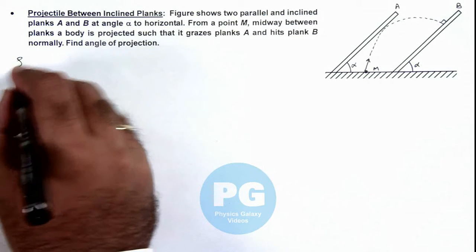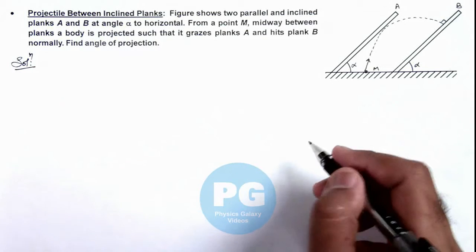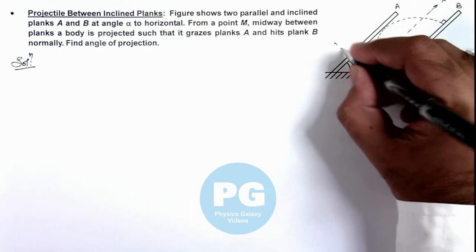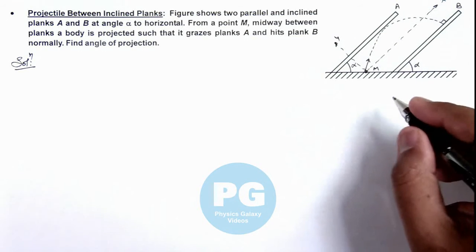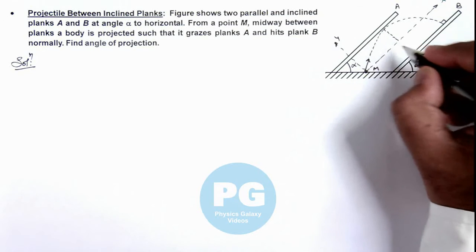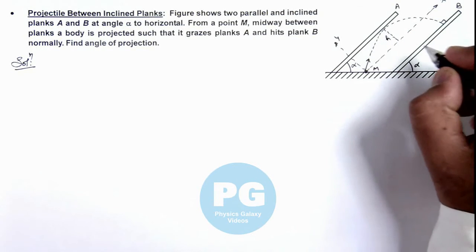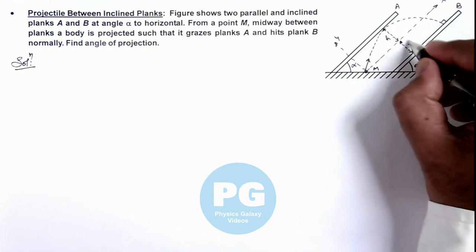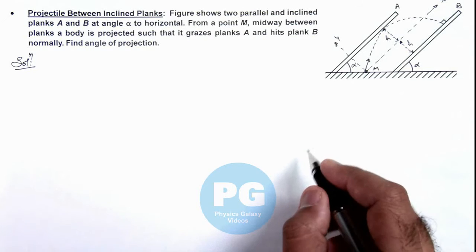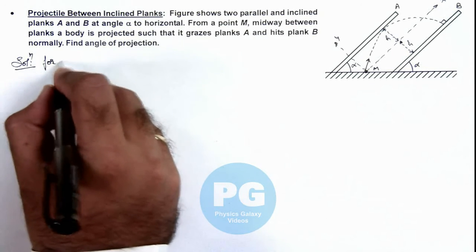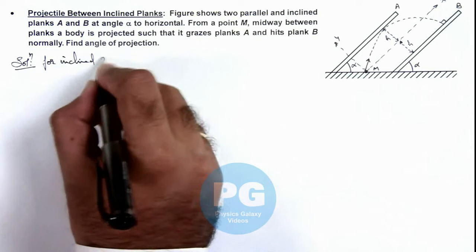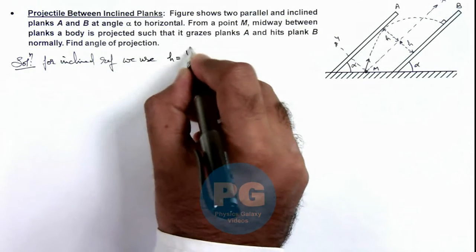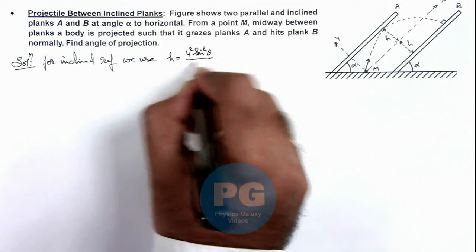If we analyze the situation in an inclined reference frame, we can consider an x-axis along the incline direction and a y-axis normal to it. Here we can consider the maximum height attained by the projectile as h. Then the other inclined plank is also located at a depth h below this, so h equals u² sin²θ divided by 2g·cos(α).